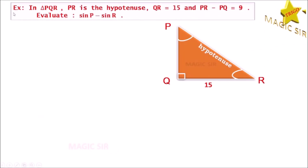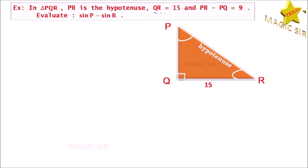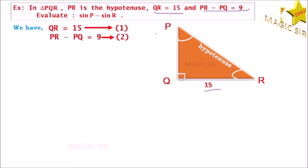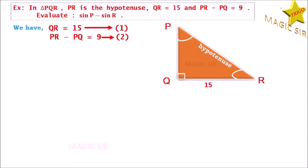Look at the second example. In triangle PQR, PR is the hypotenuse, QR equal to 15, and PR minus PQ equal to 9. We have to find the value of sin P minus sin R. Our first equation is QR equal to 15, and the second equation is PR minus PQ equal to 9.